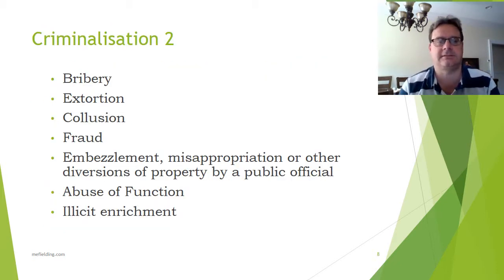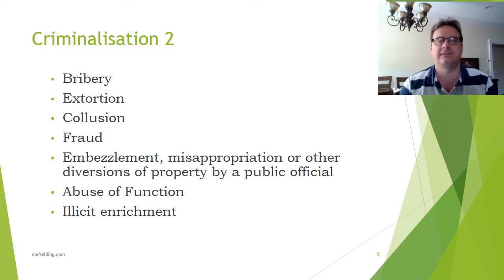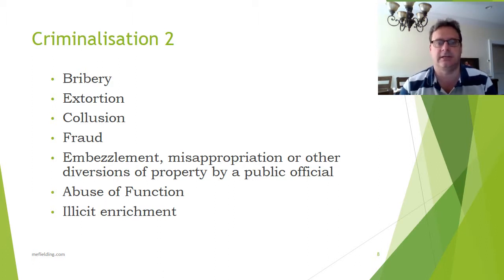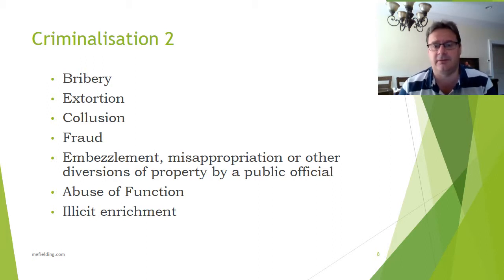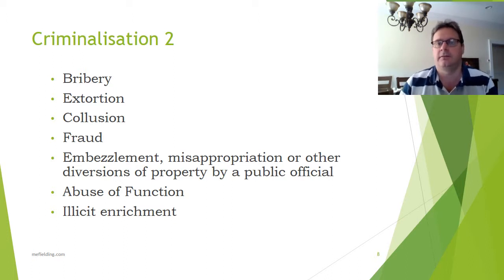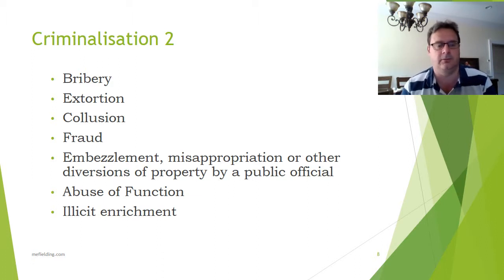The criminalisation section has two slides. The items on the slide are things considered to be criminal acts. The convention itself doesn't actually define corruption, but it does give these as examples. Bribery — very straightforward: you pay a bribe and get something in return. I'm tendering for a contract to build a road, I put $50,000 in the decision-maker's pocket, and I win the contract.